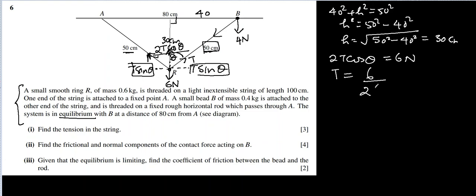Cos theta is adjacent over hypotenuse. We know adjacent is 30 and hypotenuse is 50 centimeters, so 30 over 50 will be cos theta. So let's write here 6 equals 2T times 30 over 50.